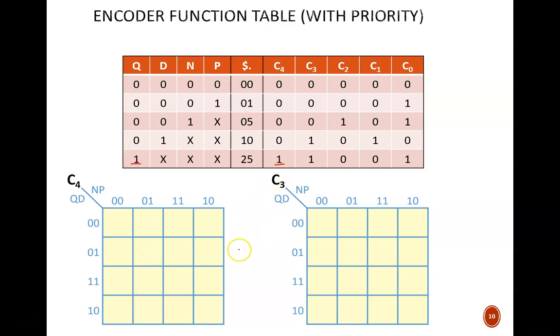So, in this bottom left square, Q equals 1. Therefore, C4 equals 1. In the next square over, Q still equals 1. Therefore, C4 equals 1. And this is true for the entire bottom half of the map.